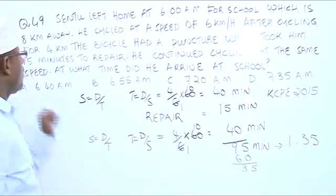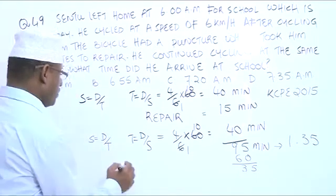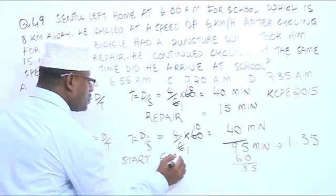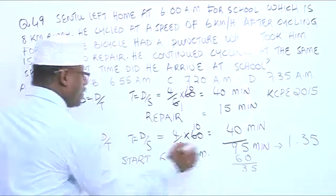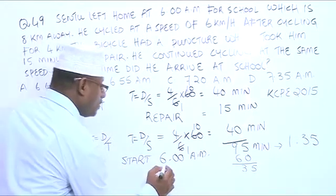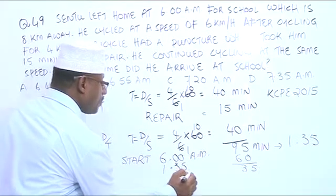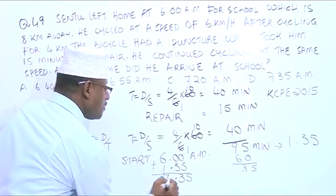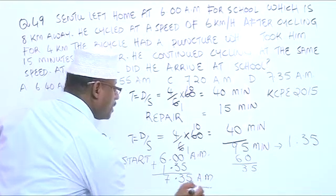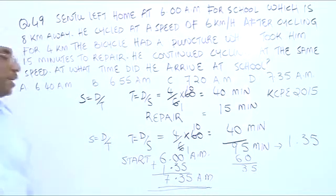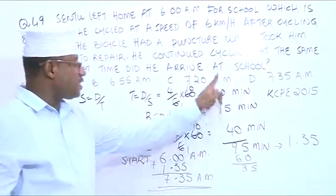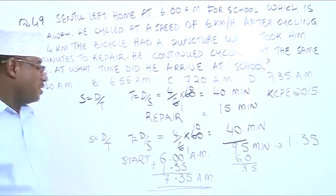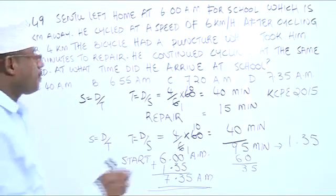Back to the question — what time did he arrive at school? The starting time is 6:00 AM. The total time he took to travel is 1 hour and 35 minutes. Adding 1 hour 35 minutes to 6:00 AM gives us 7:35 AM. This is the time he reached school. The finishing time is 7:35 AM, and our answer is D.